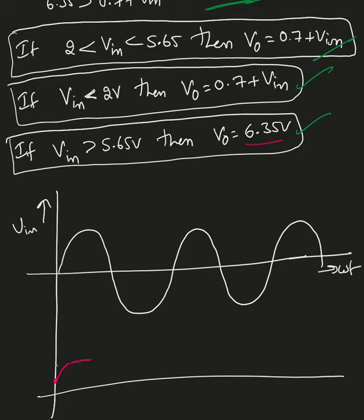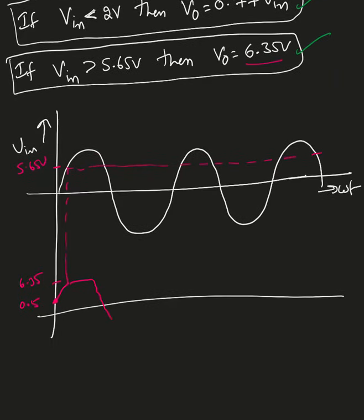When the input reaches 5.65V, the output is clipped at 6.35V. You need to indicate all these values — 6.35V and 5.65V — in the waveform to get full credit. Below 2V and between 2 and 5.65V, the output follows V_n + 0.7, so the waveform looks like a shifted and clipped sinusoid.